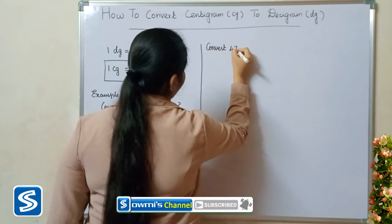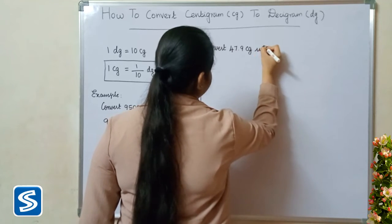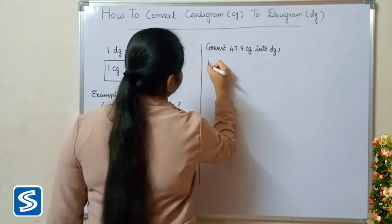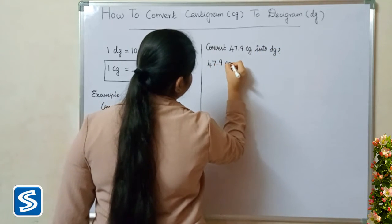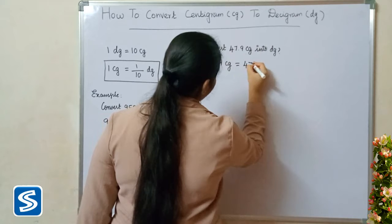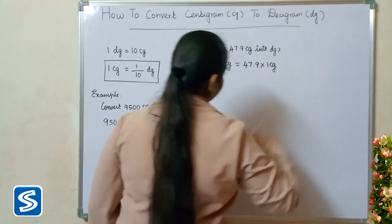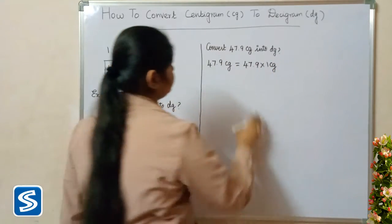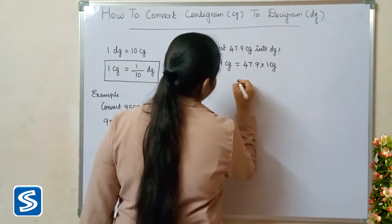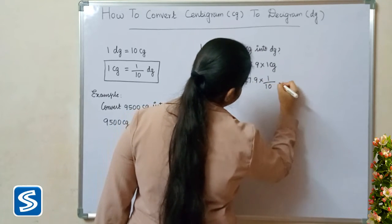Convert 47.9 centigrams into decigrams. 47.9 centigrams can be written as 47.9 multiplied by 1 centigram. Now we have to substitute 1 by 10 decigrams in the place of 1 centigram. So 47.9 multiplied by 1 by 10 decigrams.